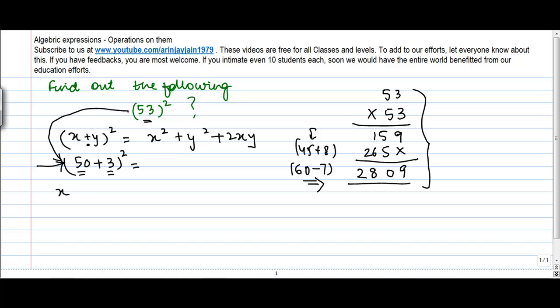So now what happens, x is equal to what here? x is equal to 50 and y is equal to 3. Putting these values of x, y in this identity, I get 50 square plus 3 square plus 2 into 50 into 3.